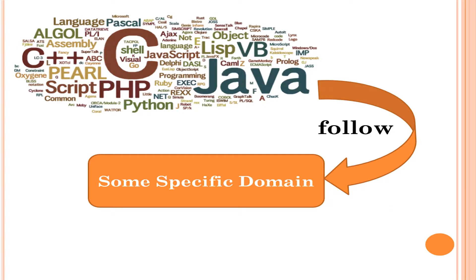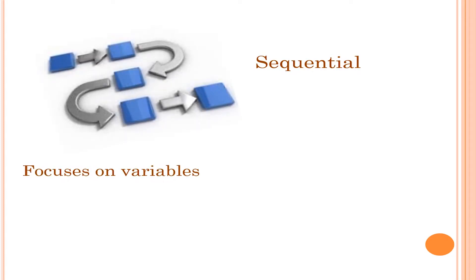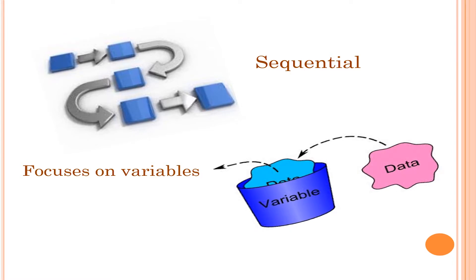For example, some of the programs execute statements in a sequential fashion and only focus on variables. Here, the term sequential means one after another. As you already know, a variable is used to store some data that can be varied.